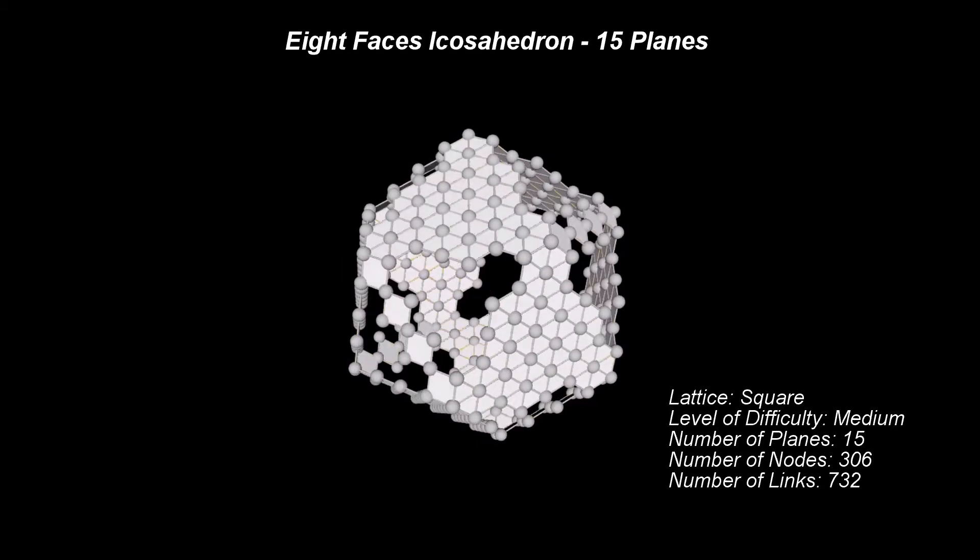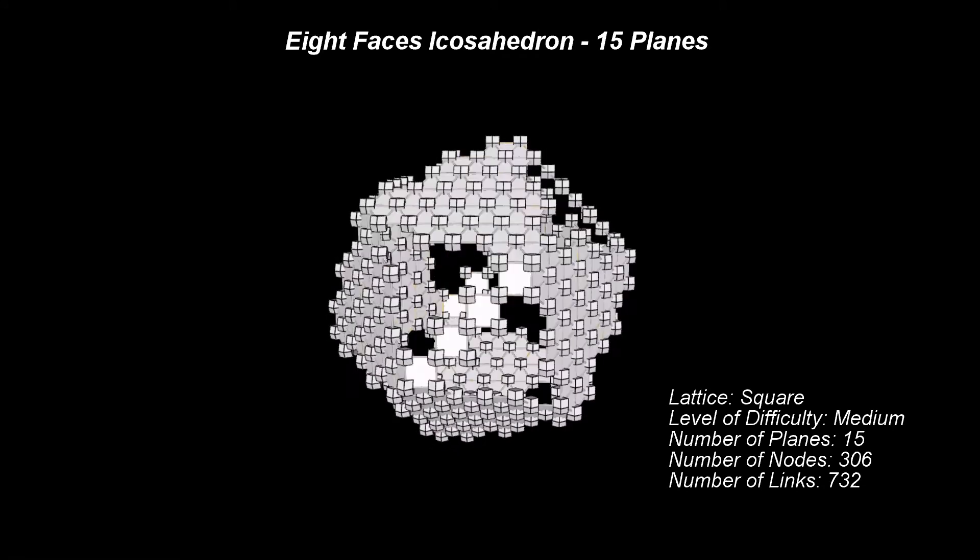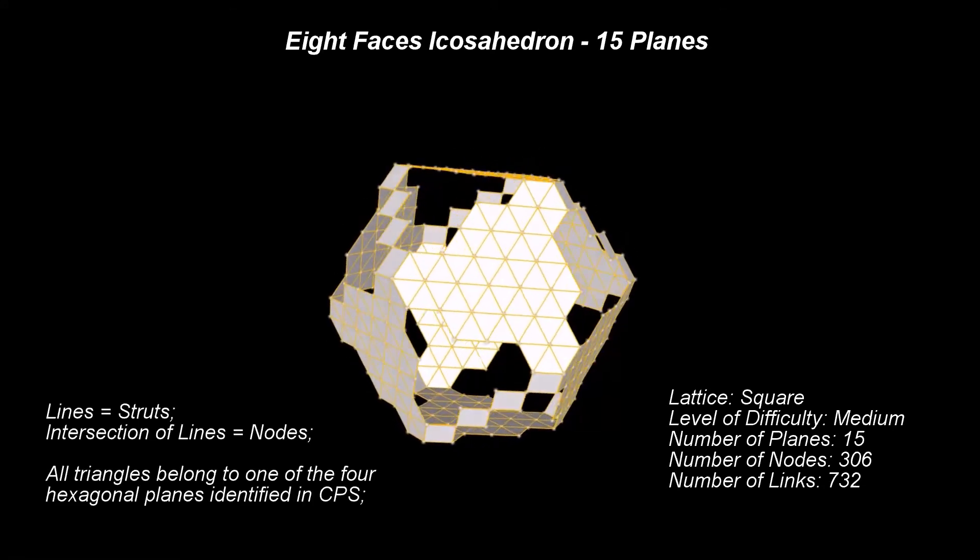As expected, all faces of the icosahedron are equilateral triangles. This makes this solid an icosahedron.